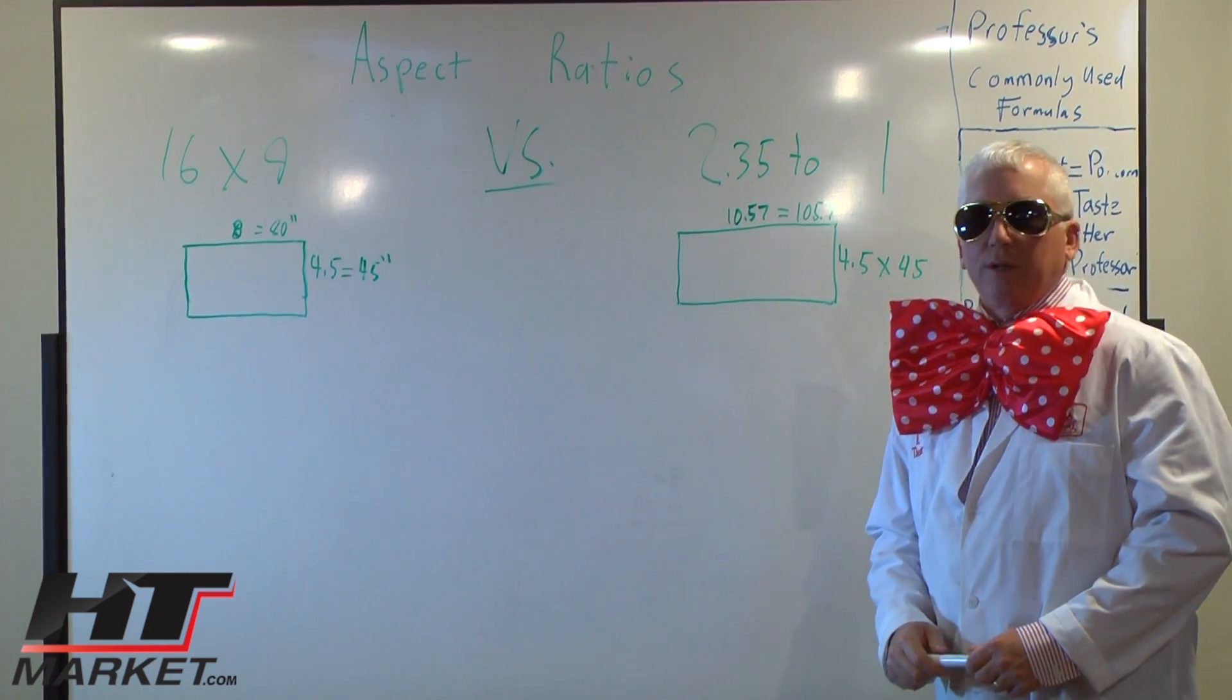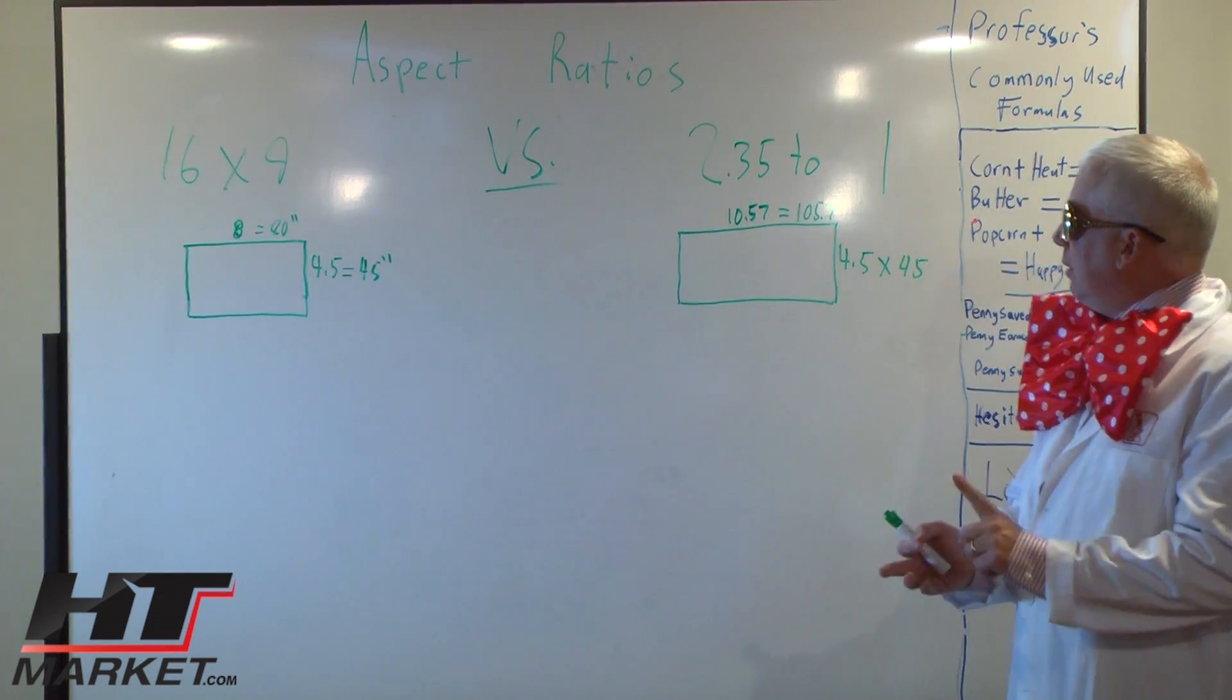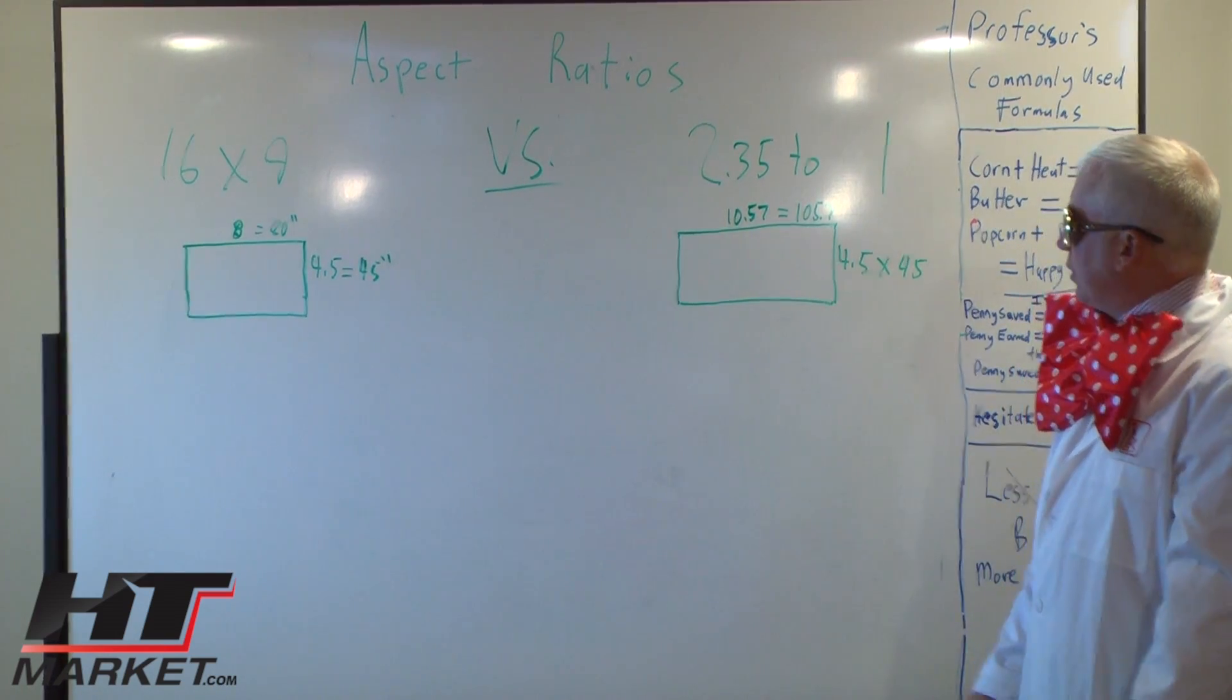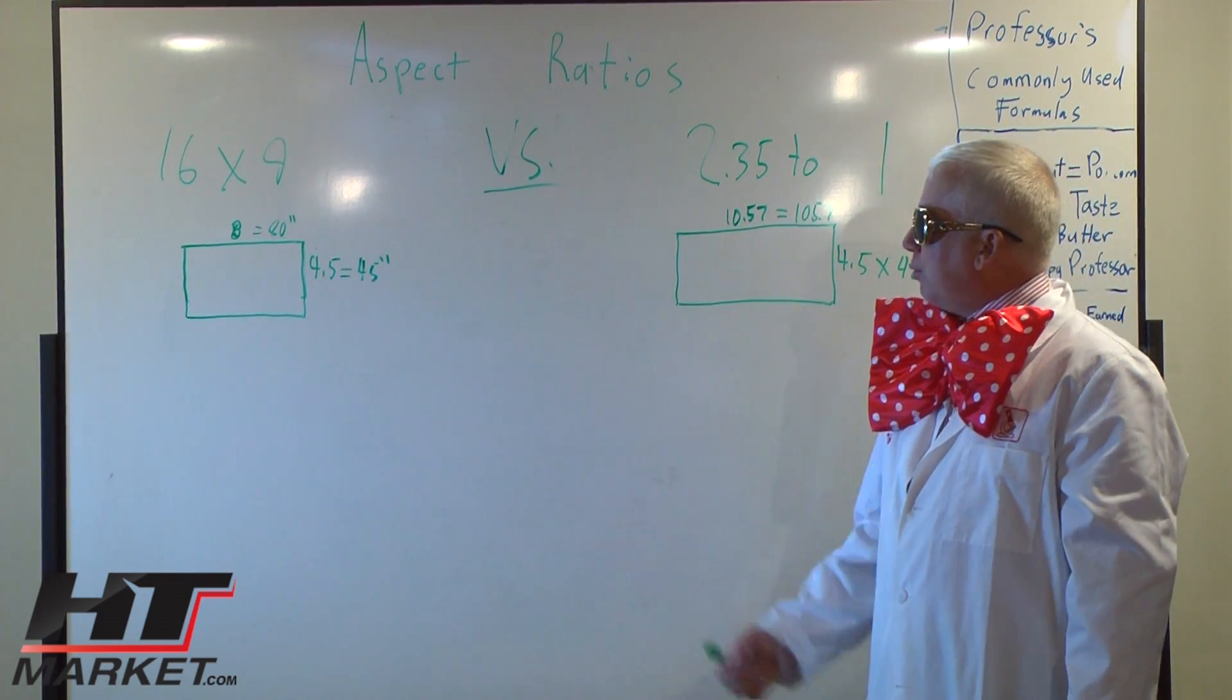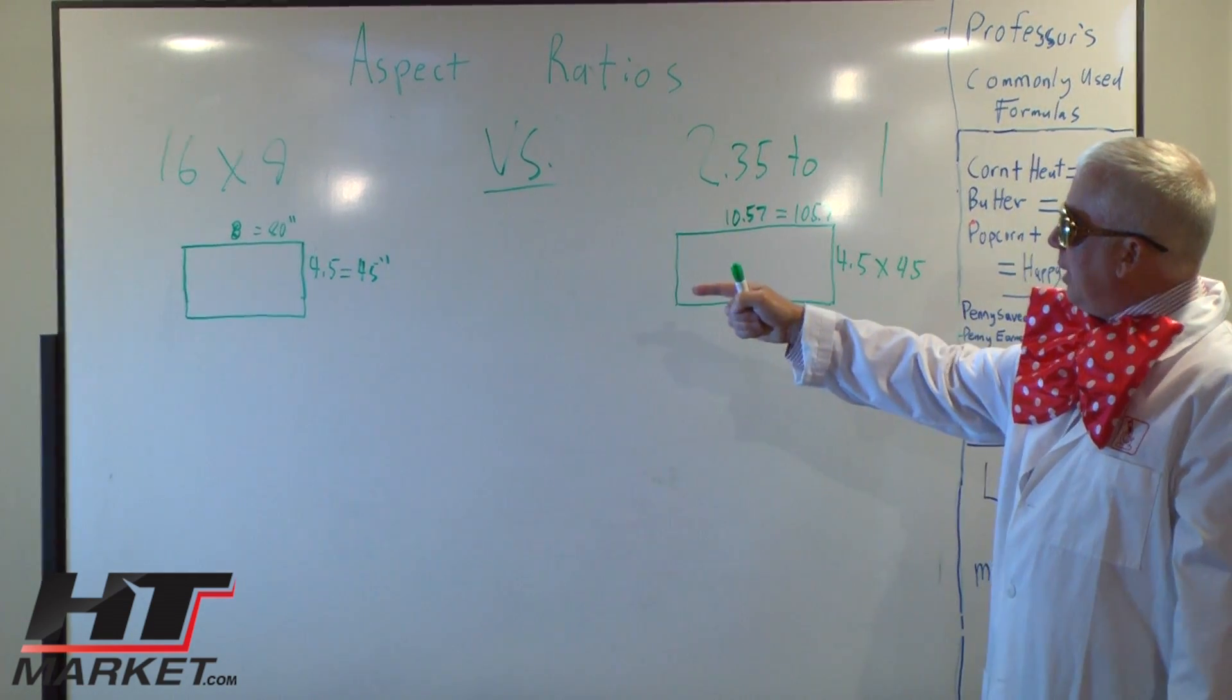Many of the projectors like JVC, Epson, Panasonic, Runco, all the projector manufacturers are using presets on the remote so you can switch between 2.35 to 1 and 16 by 9.